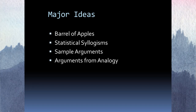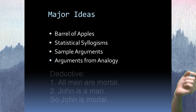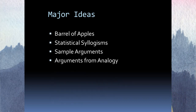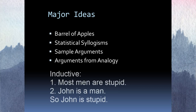A statistical syllogism is similar to some of the deductive syllogisms we looked at. A deductive syllogism is like: all men are mortal, John is a man, so John is mortal. An inductive or statistical syllogism uses, instead of 'all,' a word like 'most' or 'some.' So: most men are stupid, John is a man, so John is stupid.